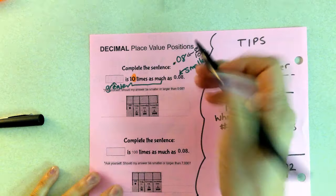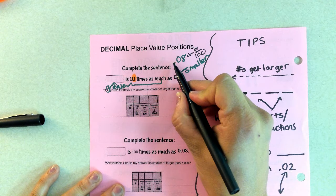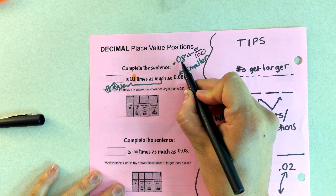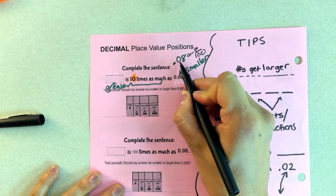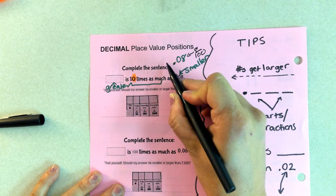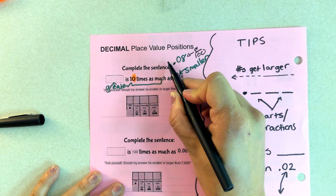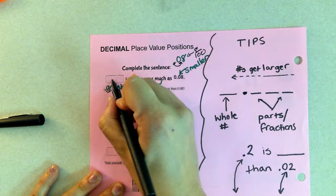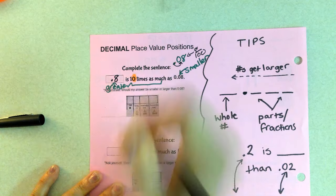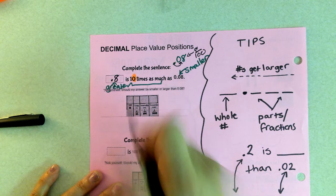Now let's look at this. If we want this number to be bigger, would I move it to the right and make it 8 tenths? Is 8 tenths bigger? Or would I move it to the left, which would make it 8 thousandths? Well, I would move it to the right to make it 8 tenths. So now 8 tenths is greater.